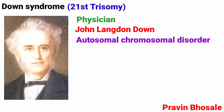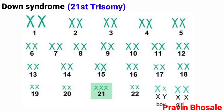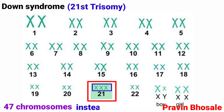This syndrome is caused due to an extra copy of chromosome number 21. It shows the presence of three copies of the 21st chromosome instead of a homologous pair. These individuals will have 47 chromosomes instead of the normal number 46.